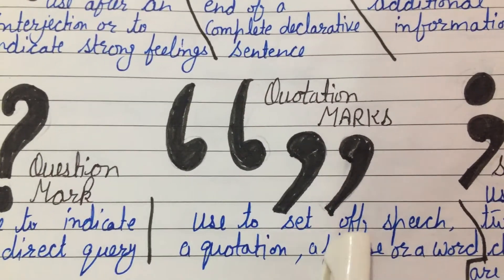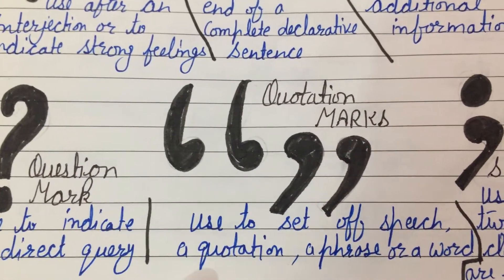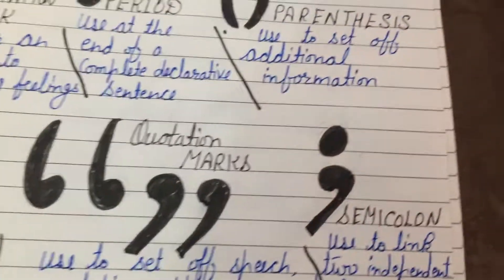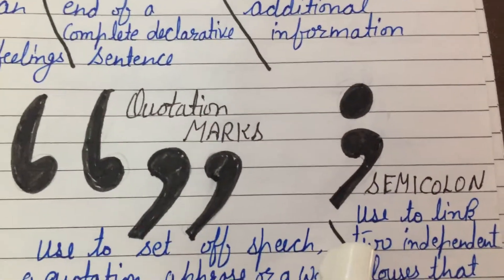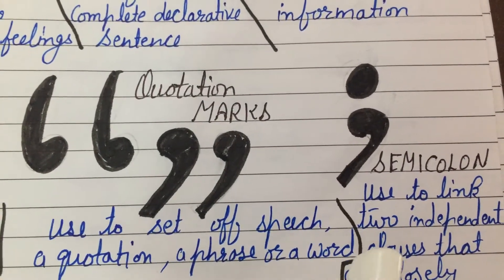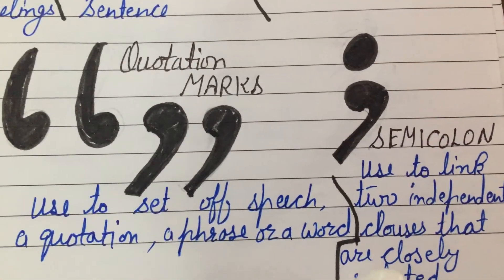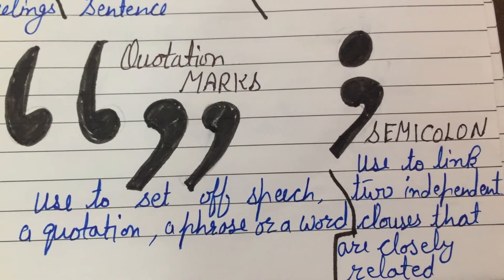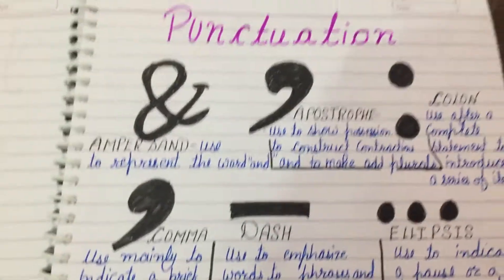And this one, quotation marks, used to indicate a phrase or a word. And this one, semicolon, used to link two independent clauses that are closely related. Our today's topic is over.